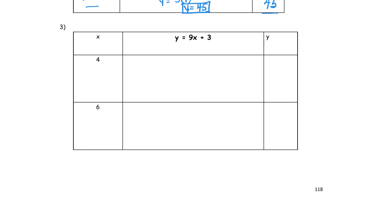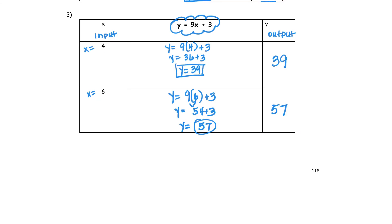Lastly, we have number three. Your input is x and your output is y. For the remaining two, x is equal to 4 and x is equal to 6 — try that one on your own, pause the video, and then check your answers. When x is equal to 4, your output is 39. And when x is equal to 6, your output is 57.